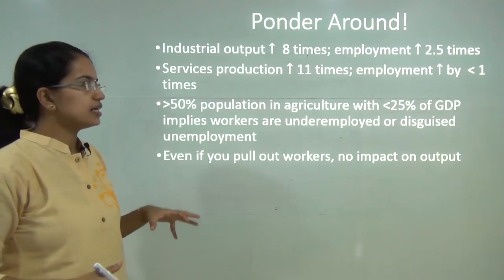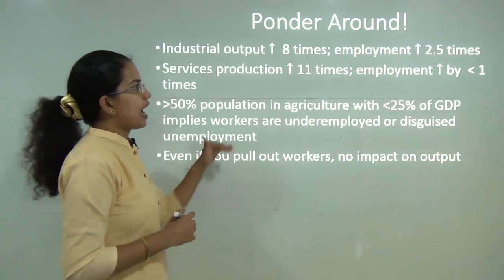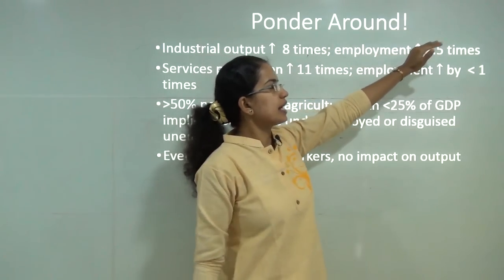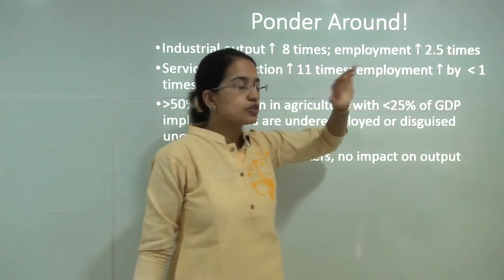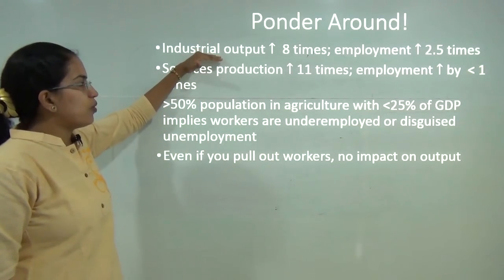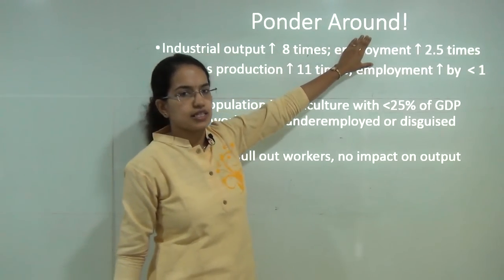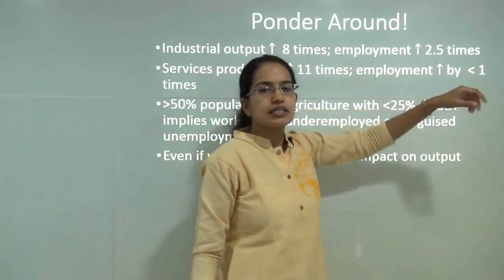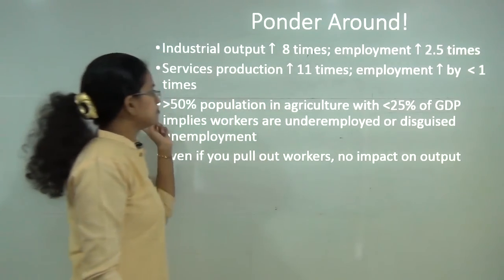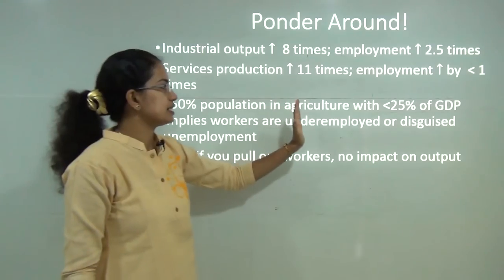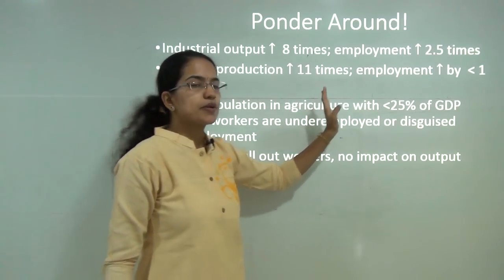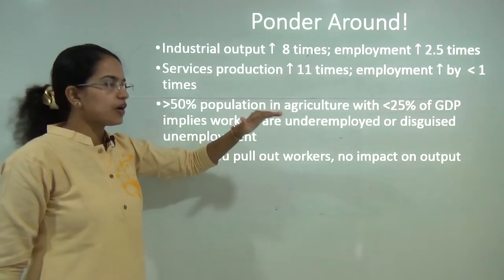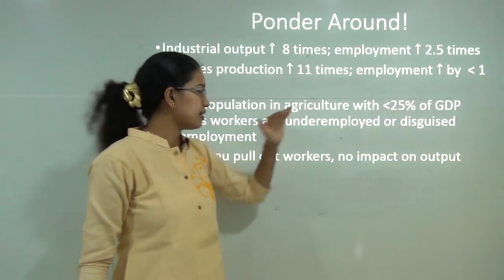Our industrial output has increased eight times since past decades; however, employment has risen by only 2.5 times — meaning we are producing more, but employment in the industrial sector is not matching it. Service sector production has increased 11 times, but employment has increased by less than 1 percent. When it comes to agriculture, more than 50 percent of the population is engaged in agriculture, which is contributing to less than 25 percent of the net GDP of the nation — indicating the problem of underemployment or disguised unemployment.